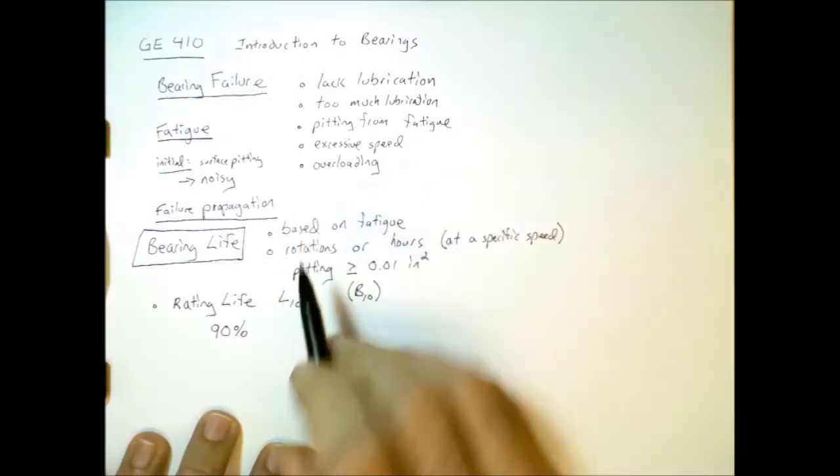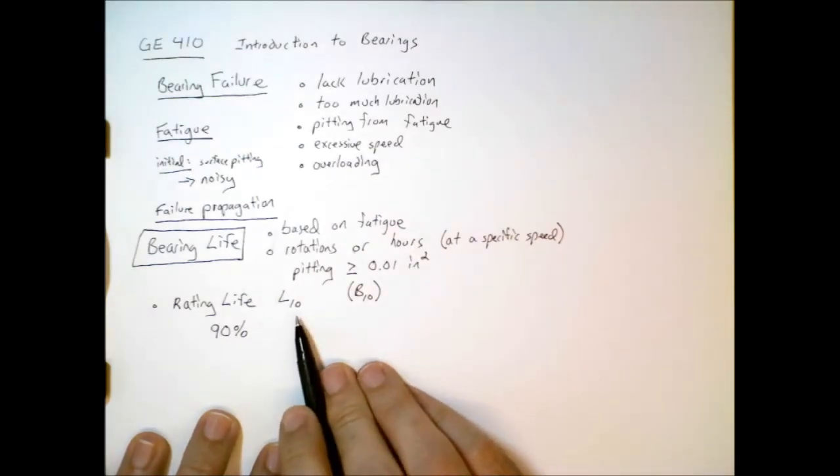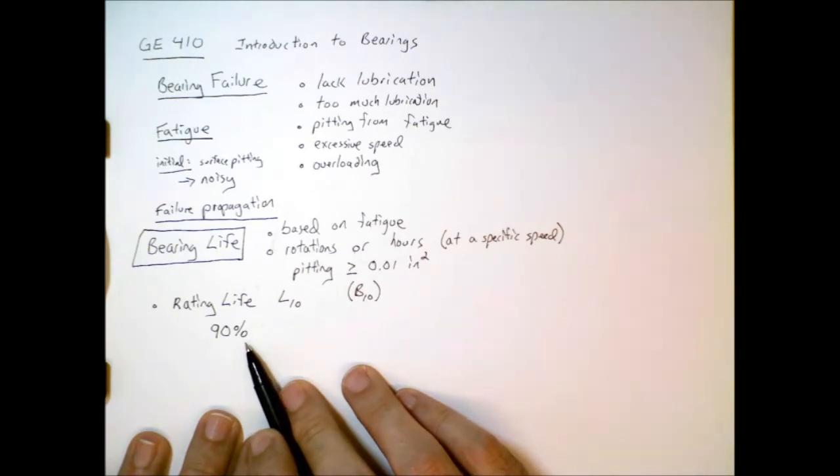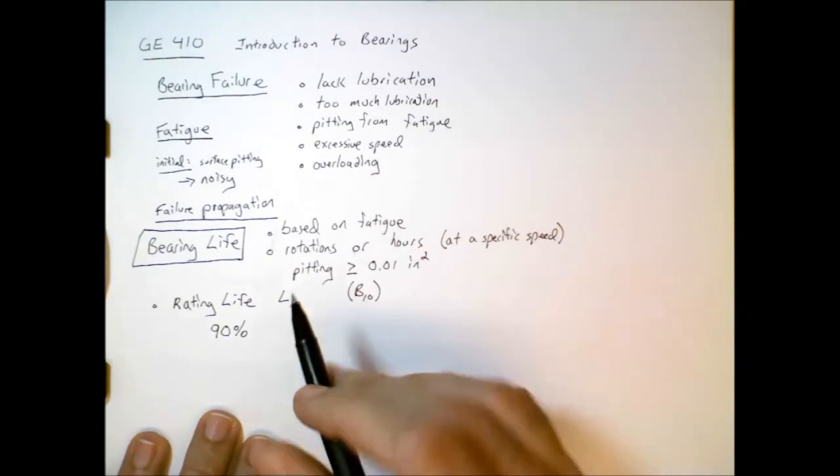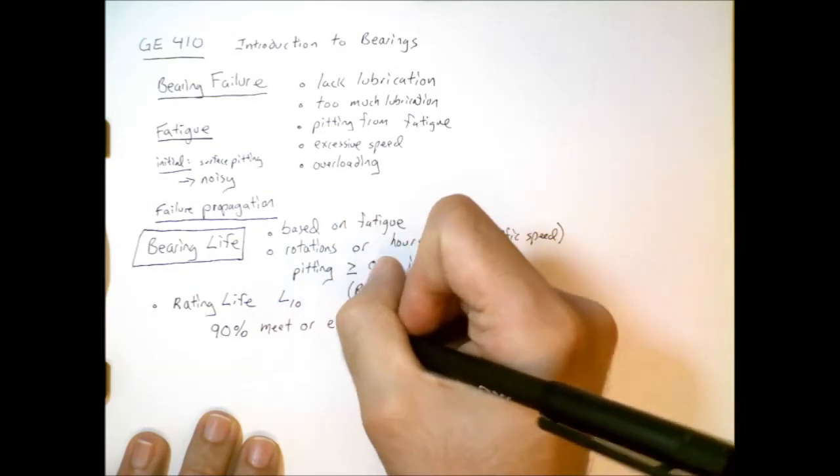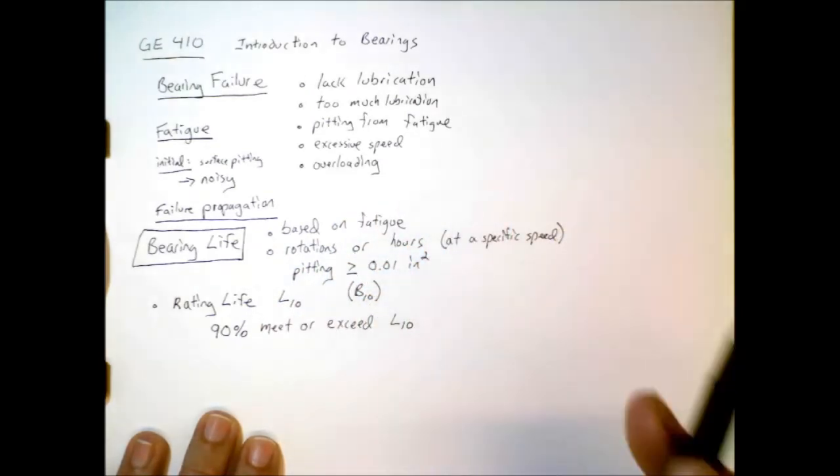The way we can understand the L-sub-10 life is this is the number of rotations where 90% of bearings will meet or exceed this life.